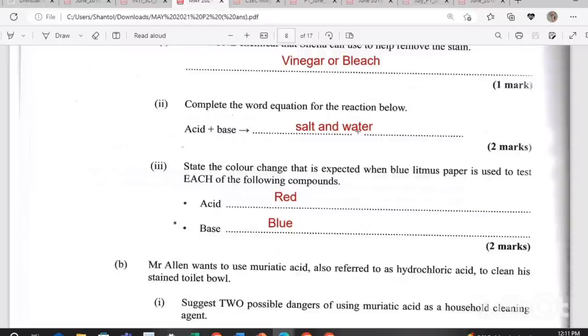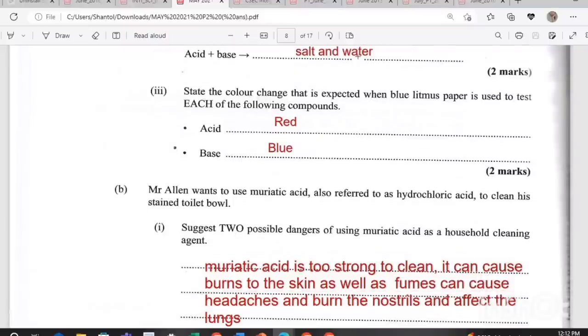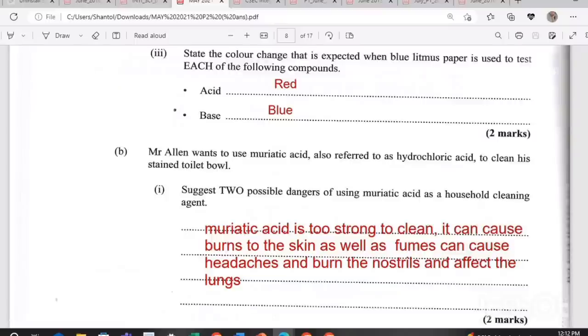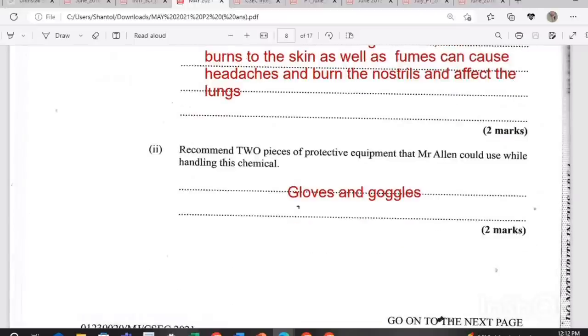State the color change that is expected when blue litmus paper is used to test each of the following compounds. Blue litmus paper turns red when you use it to test an acid. And a base or an alkali would remain blue. Mr. Allen wants to use muriatic acid also referred to as hydrochloric acid to clean his stained toilet bowl. Suggest two possible dangers of using muriatic acid as a household cleaning agent. Muriatic acid is too strong to clean. It can cause burns to the skin as well as fumes can cause headaches and burn the nostrils and affect the lungs.